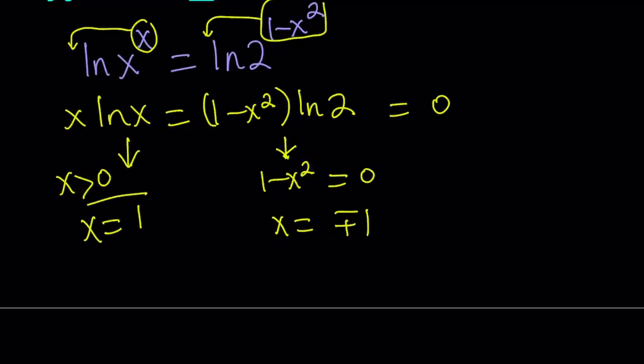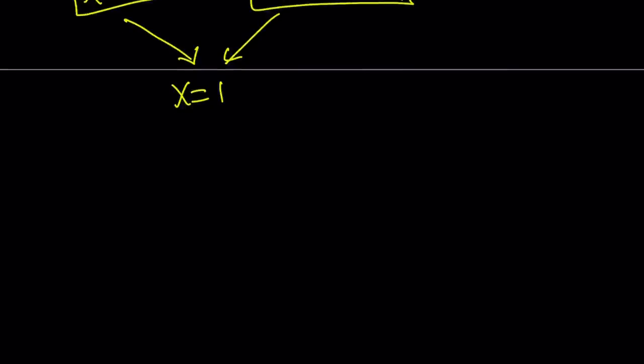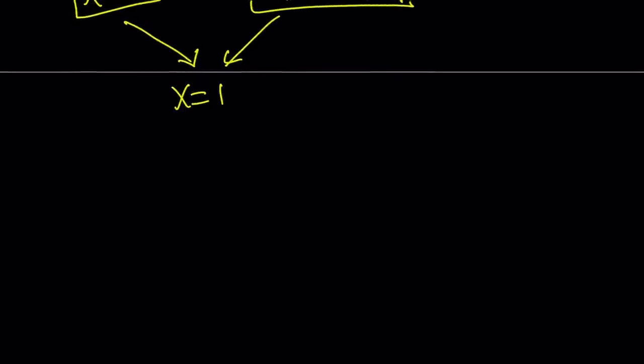So we have the following cases, and of course, both of them have to happen at the same time. So this tells you that the intersection is x equals 1. Now, obviously, this doesn't solve this equation completely because we still have to find other solutions if there are any, or prove that there are no other solutions. But x equals 1 is a solution.